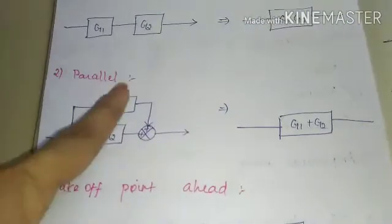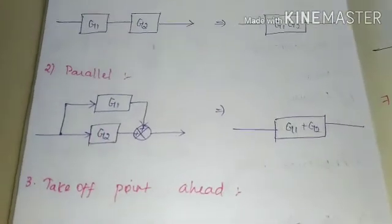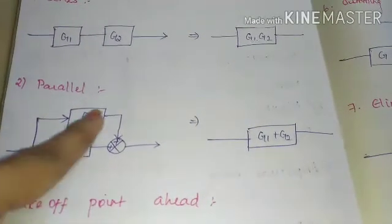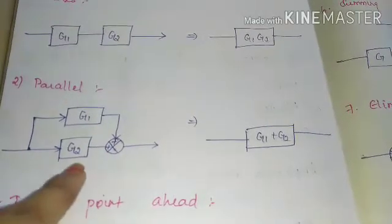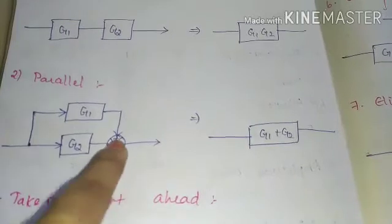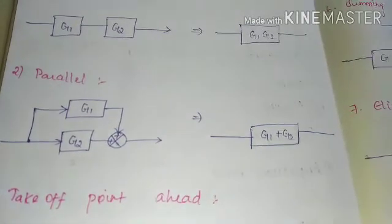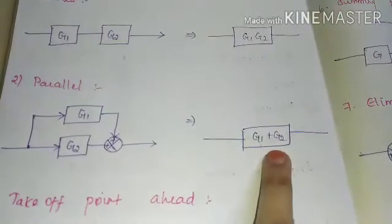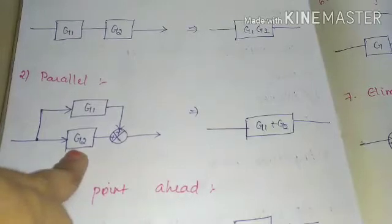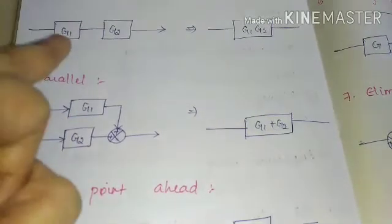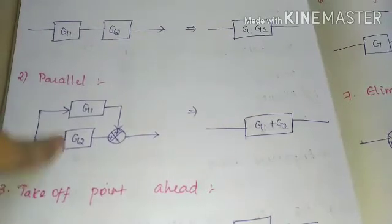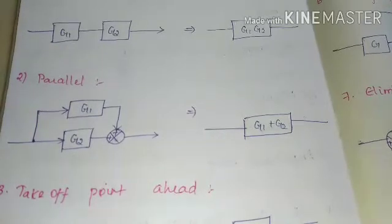The second rule is when two blocks are connected in parallel form and connected with a summer. Here G1 is in the forward path and one more forward path with gain G2. If the summer has a plus sign, we add: G1 plus G2. If it is a negative sign, we subtract: G1 minus G2. When two arrow marks are facing in the same direction, these two blocks are assumed to be in the forward path — that is, parallel form.